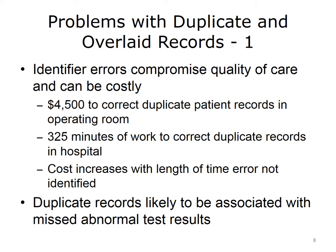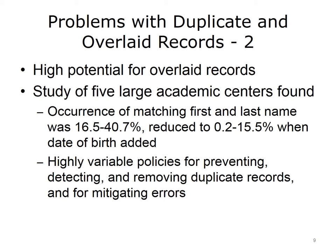One study over a decade ago identified that errors in patient identifiers compromise the quality of care and can be costly, noting an expense of about $4,500 to correct duplicate patient records in an operating room and taking 325 minutes of work. The cost was found to increase with the length of time that the error was not identified. More recently, it's been shown that duplicate records are more likely to be associated with missed abnormal test results. In one analysis of five large academic medical centers, the occurrence of patients with the same first and last name was anywhere from 16% to 40%, though reduced when date of birth was added. These institutions also had highly variable policies for how they prevent, detect, and remove duplicate records, as well as different approaches to mitigating these errors.